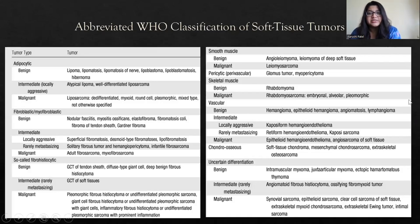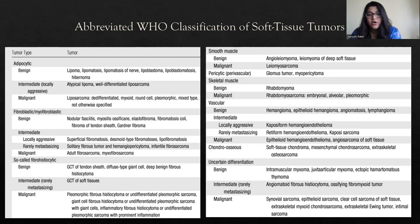The WHO classification of soft tissue tumors divides them according to the soft tissue from which they originate. They could be adipocytic, fibroblastic or myofibroblastic, so-called fibrohistiocytic intermediate type, from smooth muscles, skeletal muscle, vascular origin, chondro-osseous, or of uncertain differentiation.